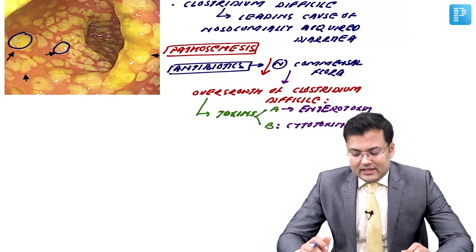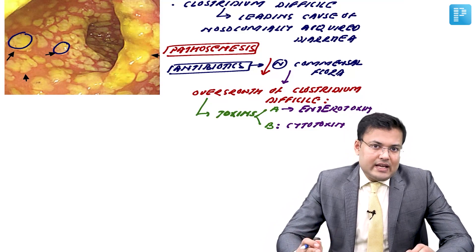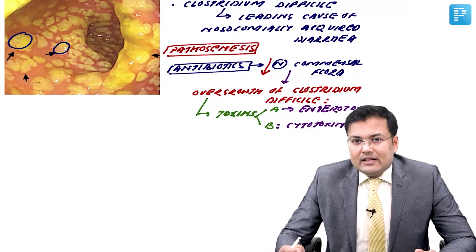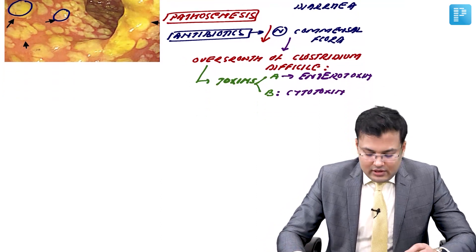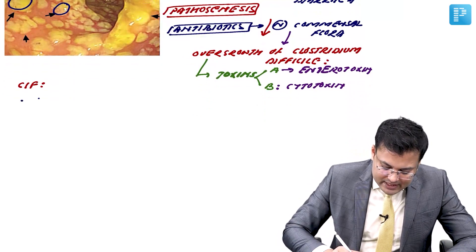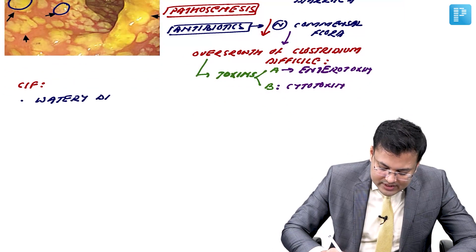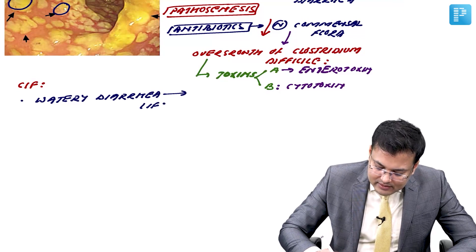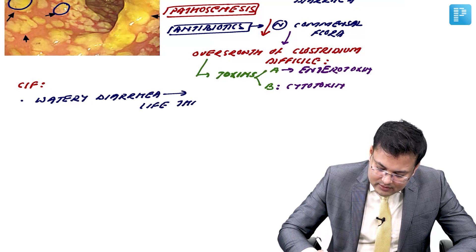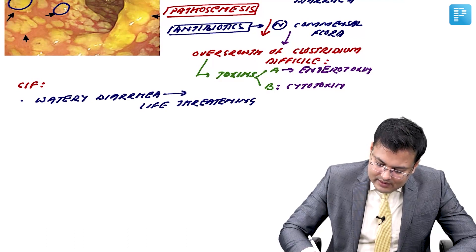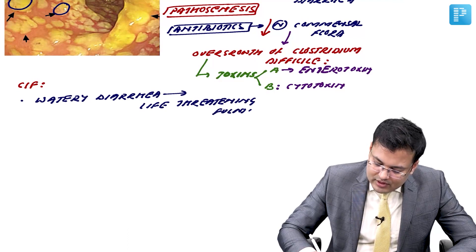The spectrum of disease caused by these toxins ranges from only watery diarrhea to life-threatening fulminant colitis.